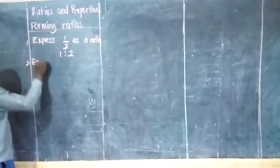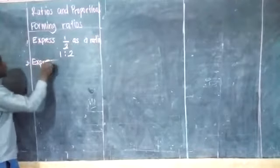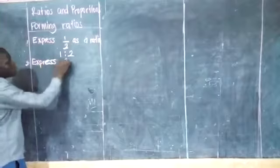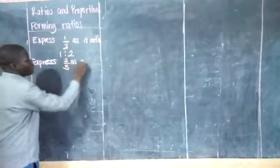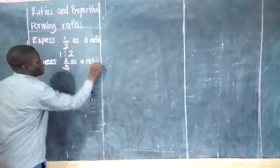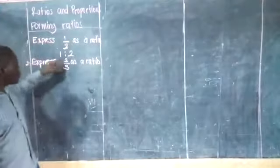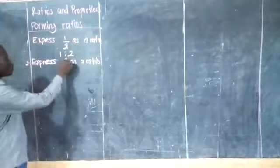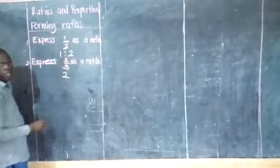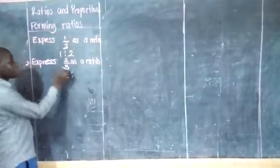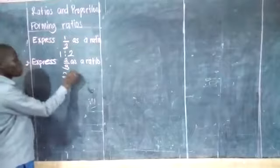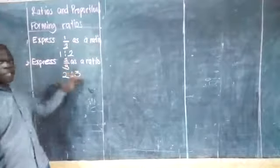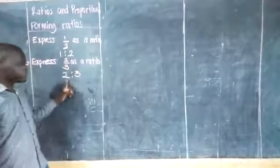They will ask you to express 2 thirds as a ratio. The top part will be the first part of the ratio and the denominator will be the second part of the ratio. So 2 thirds in ratio form will be 2 to 3.